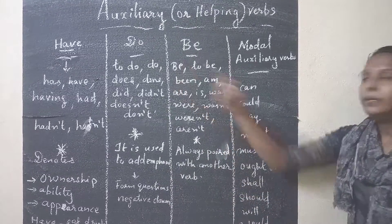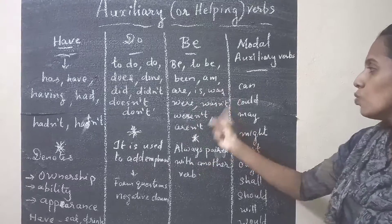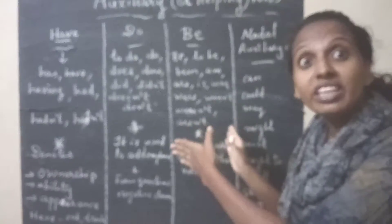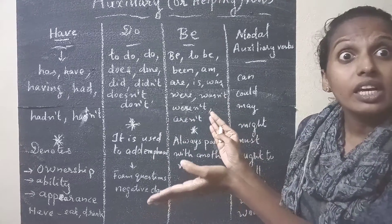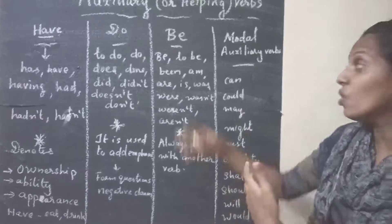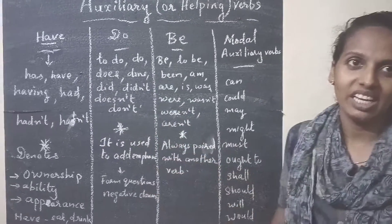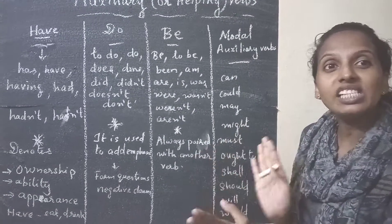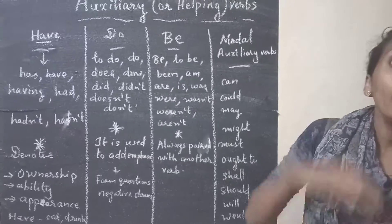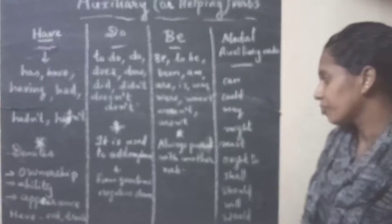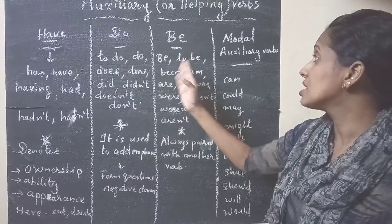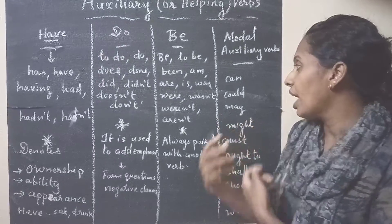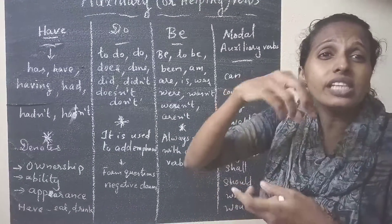Now let's go to 'be.' The forms of be include: am, is, are, was, were, and aren't. This is used with continuous tenses — it is always paired with another verb. For example: 'I am working,' 'She is working,' 'I am wearing them.' All these auxiliary be-verbs are paired with other verbs in continuous tenses.